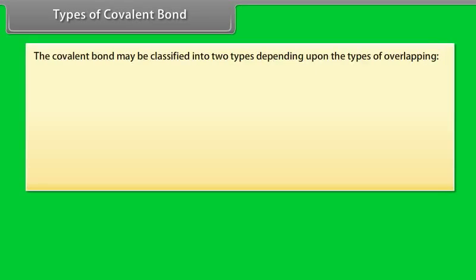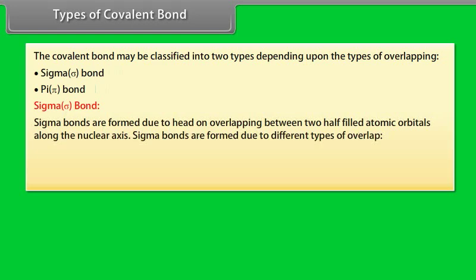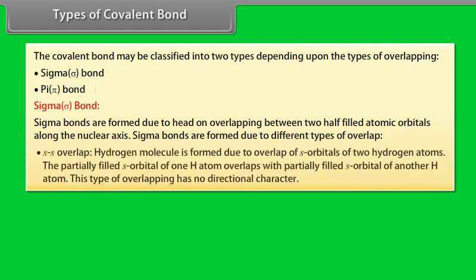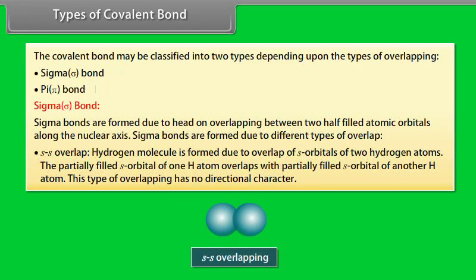Types of Covalent Bond. The covalent bond may be classified into two types depending upon the types of overlapping: Sigma Bond and Pi Bond. Sigma bonds are formed due to head-on overlapping between two half-filled atomic orbitals along the nuclear axis. SS overlap: hydrogen molecule is formed due to overlap of S orbitals of two hydrogen atoms — the partially filled S orbital of one H atom overlaps with the partially filled S orbital of another H atom. This type of overlapping has no directional character.